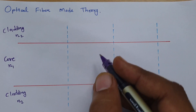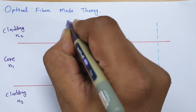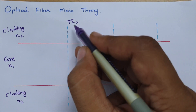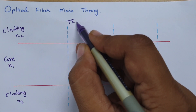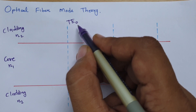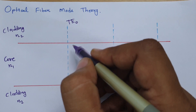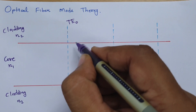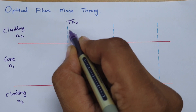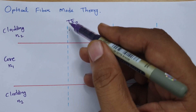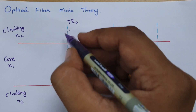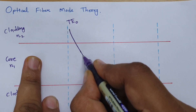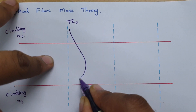To understand this, consider Transverse Electric zero — TE0 mode. As per TE0, the zero indicates there will be zero crossings happening along the propagation. If I draw the field, you will find there is no crossing of the reference line occurring as the mode propagates.